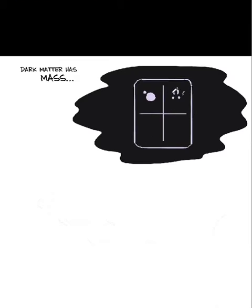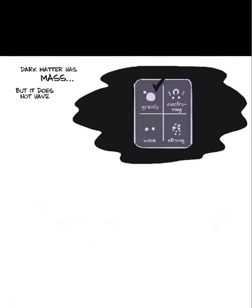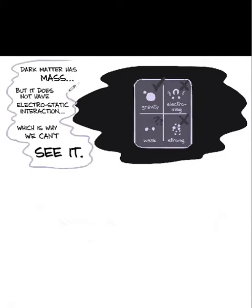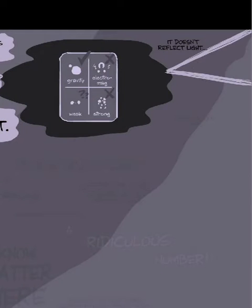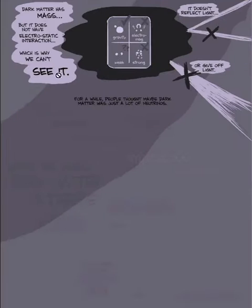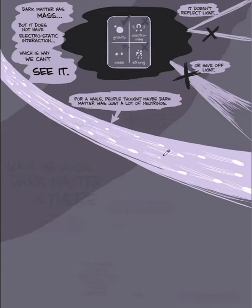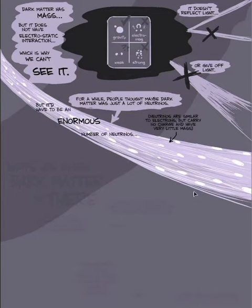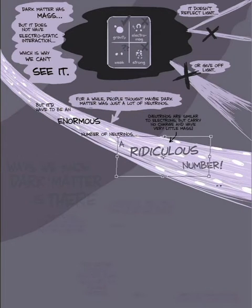Dark matter has mass, but does not have electrostatic interactions, which is why we can't see it. It doesn't reflect light or give off light. For a while, people thought maybe dark matter was just a lot of neutrinos, but it'd have to be an enormous number of neutrinos, like a ridiculous number of neutrinos.